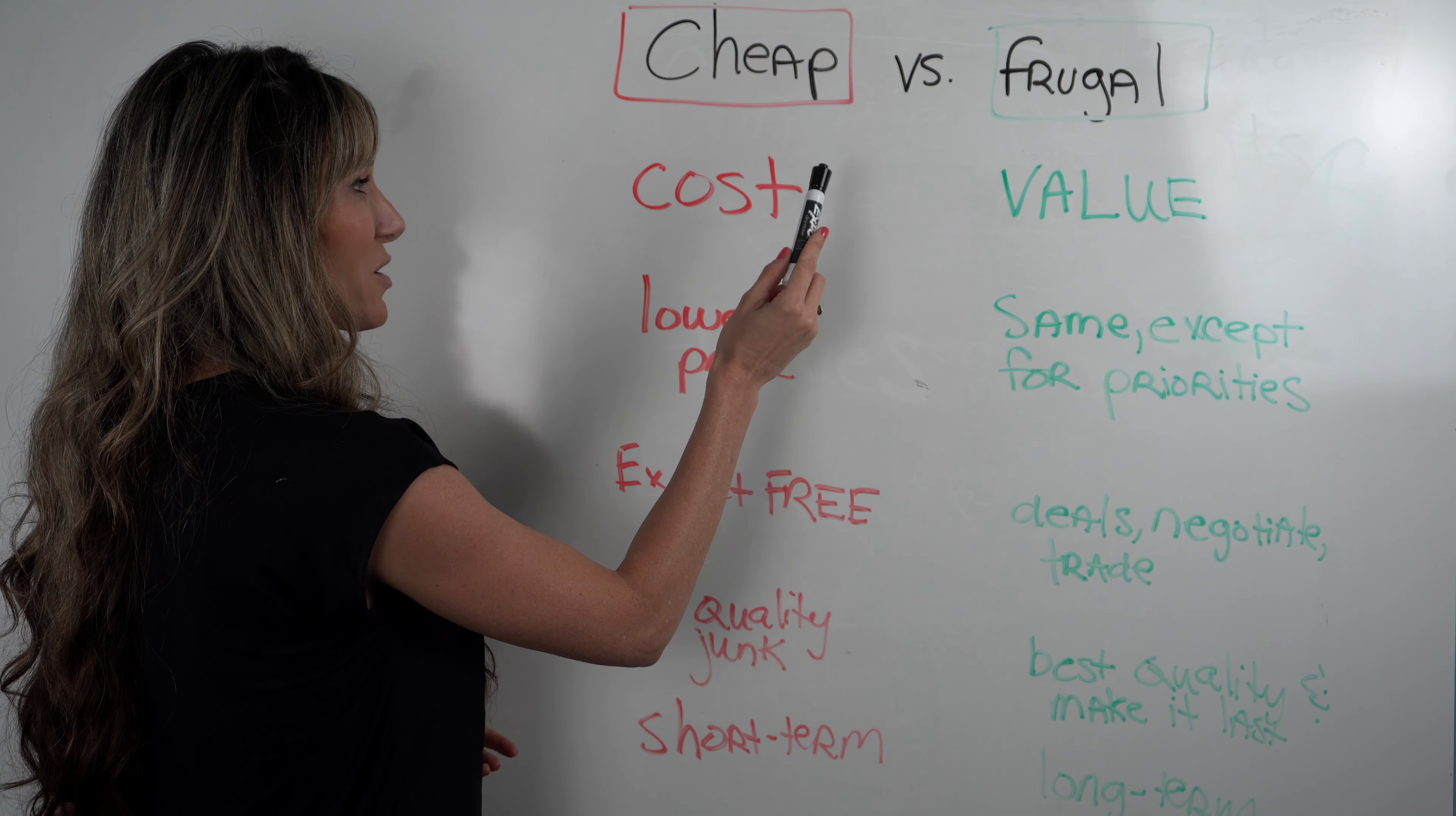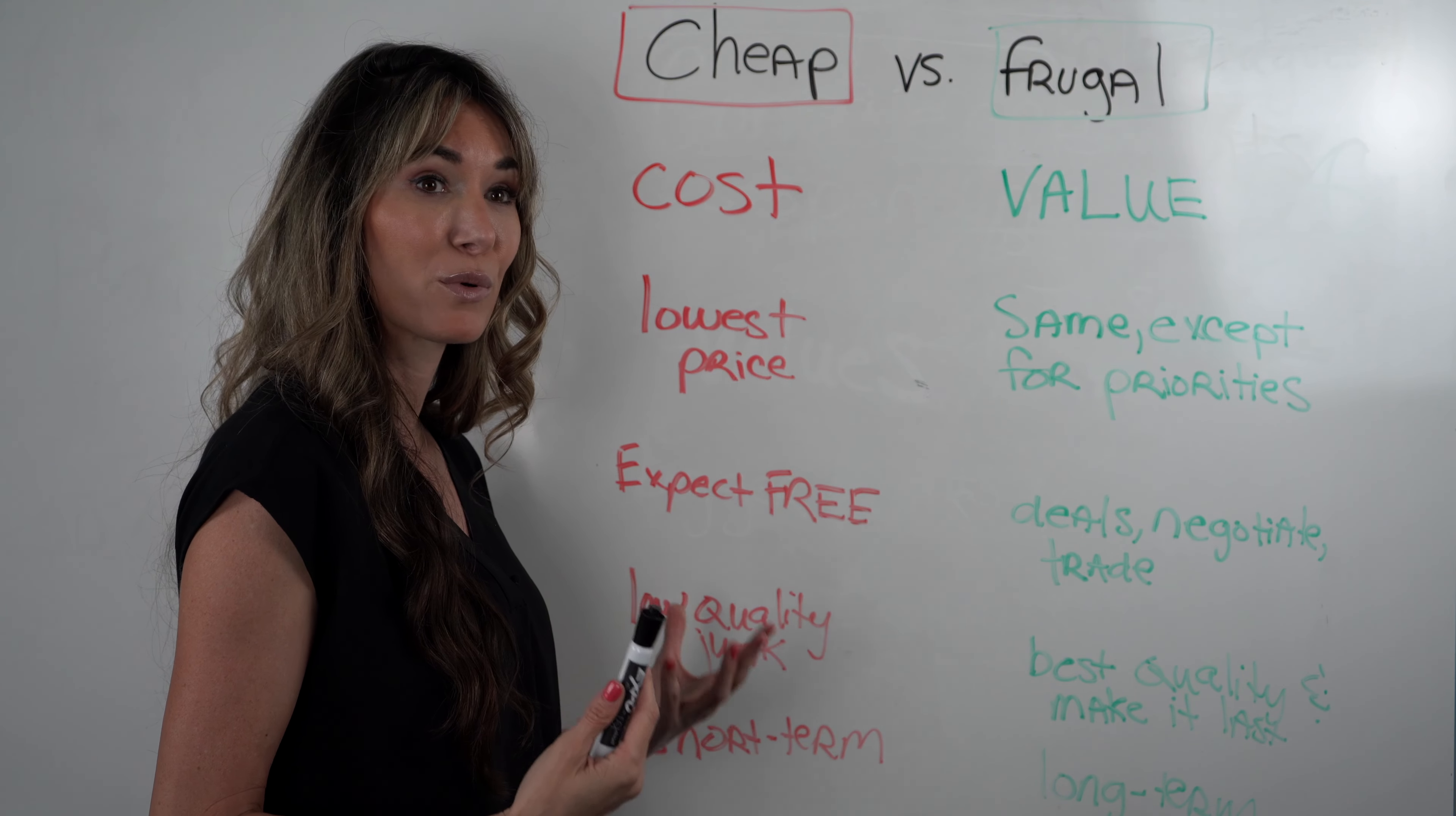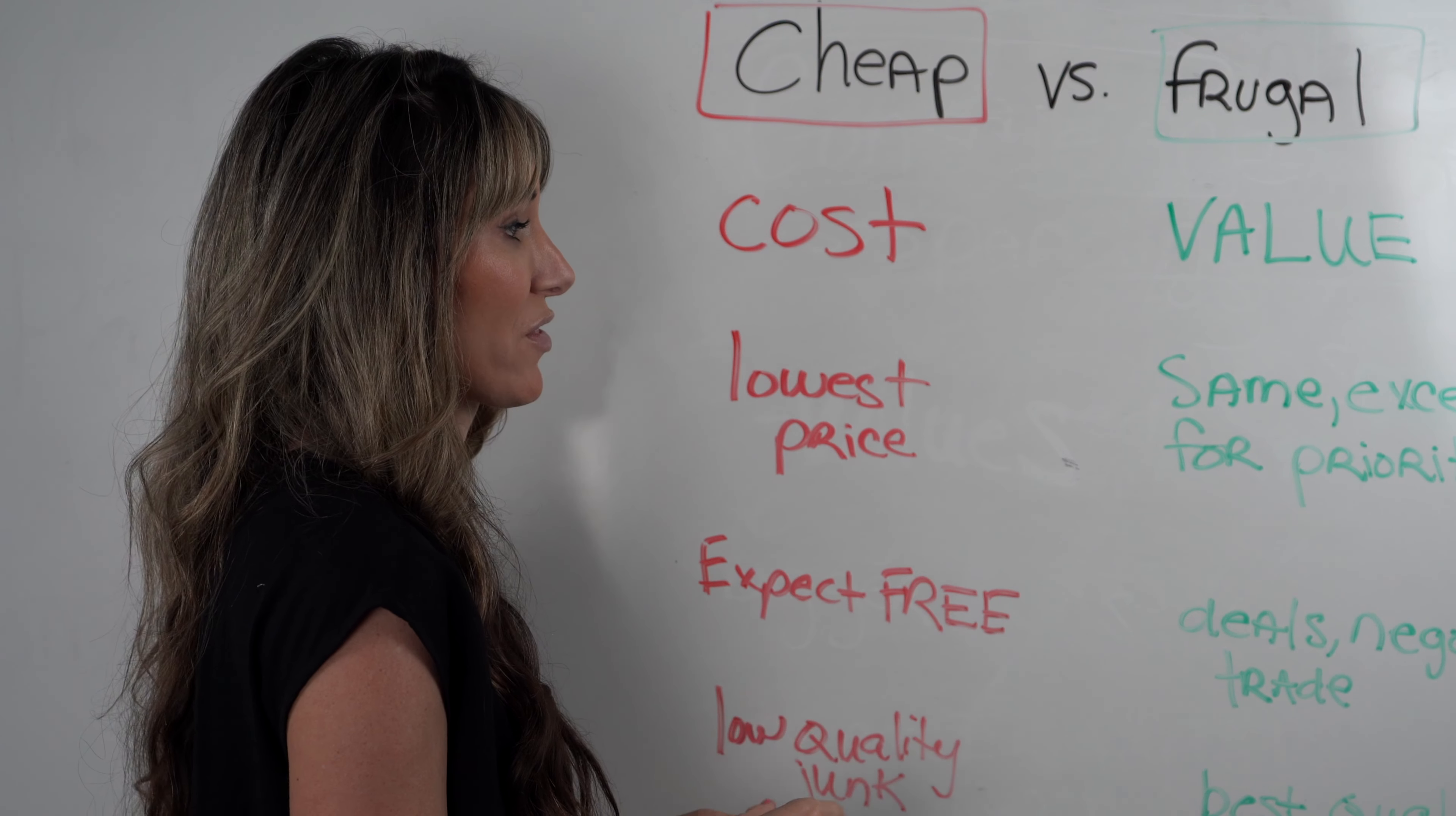So cheap people only care about cost. What is the cheapest thing that they can buy? Whereas people that are frugal, they just want the highest value out of something. Price is important, but they care about the value. Cheap people only want the lowest price. That's all that matters to them. Frugal people, well, kind of same thing. They want the lowest price, but also except for the things that they prioritize.